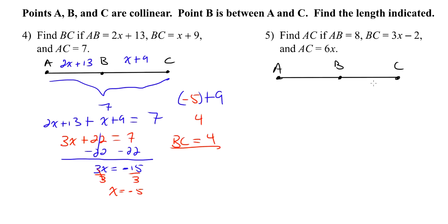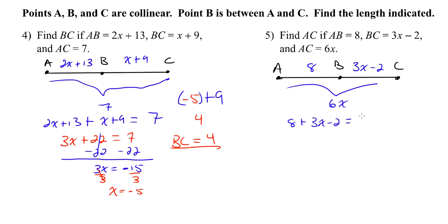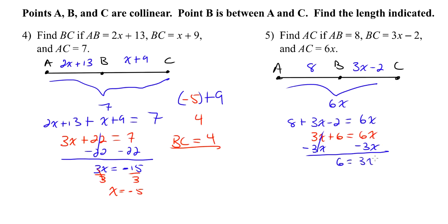For number 5, find AC if AB is 8, BC is 3x minus 2, and AC is 6x. We write our equation: 8 plus 3x minus 2 equals 6x. Combining like terms, 8 minus 2 is 6, giving 3x plus 6 equals 6x. Subtracting 3x from both sides gives 6 equals 3x. Dividing by 3 gives x equals 2. AC is 6x, so 6 times 2 is 12. AC equals 12.